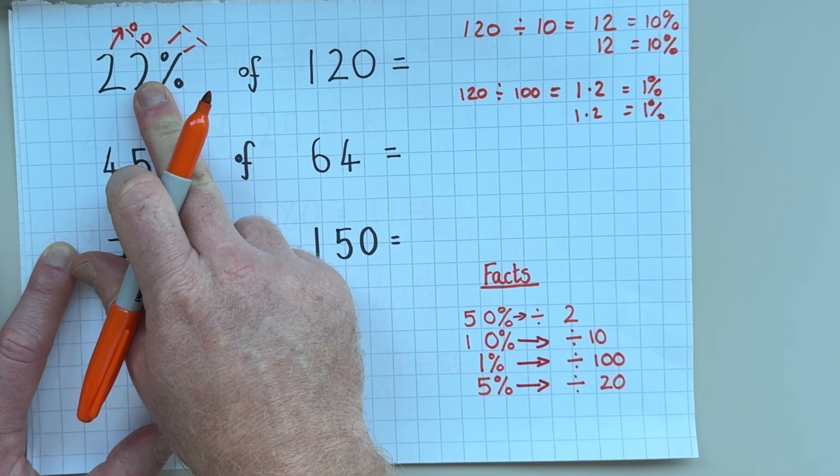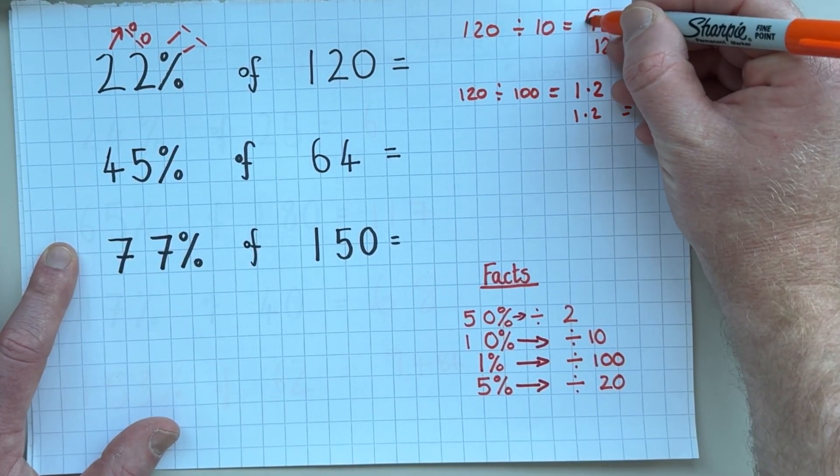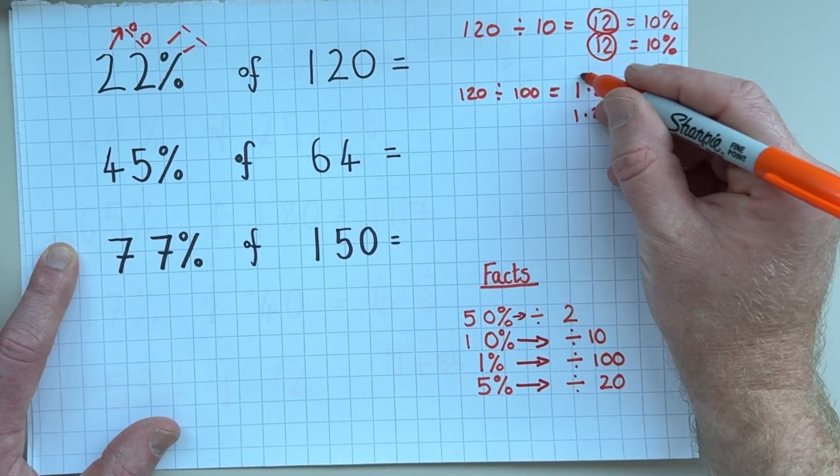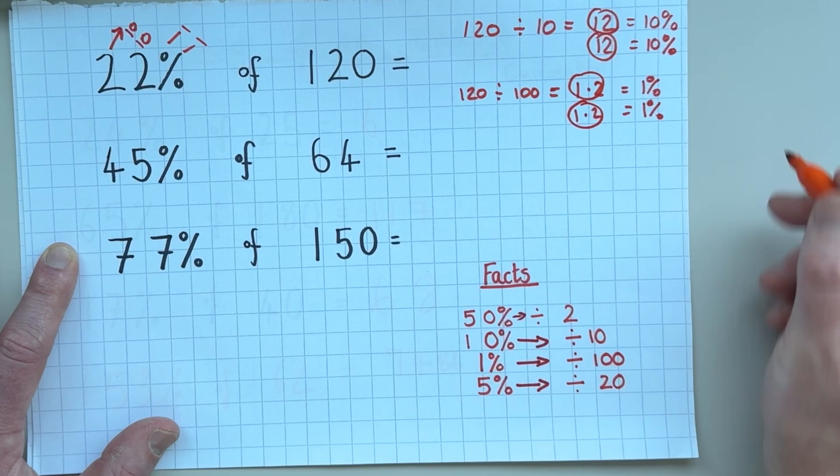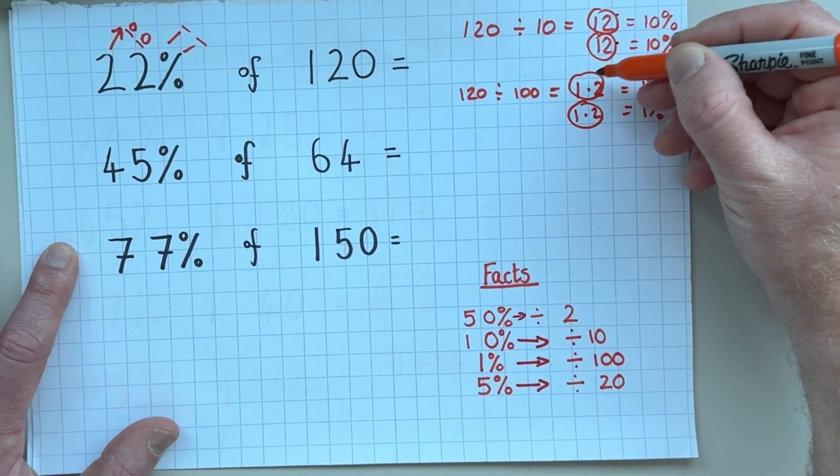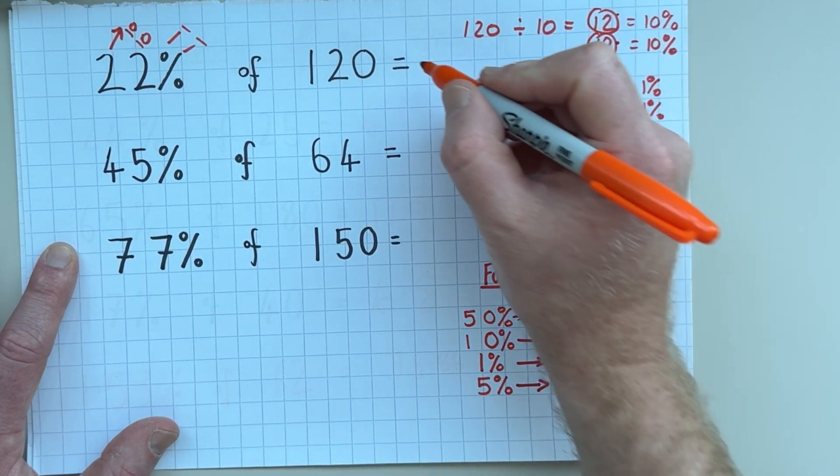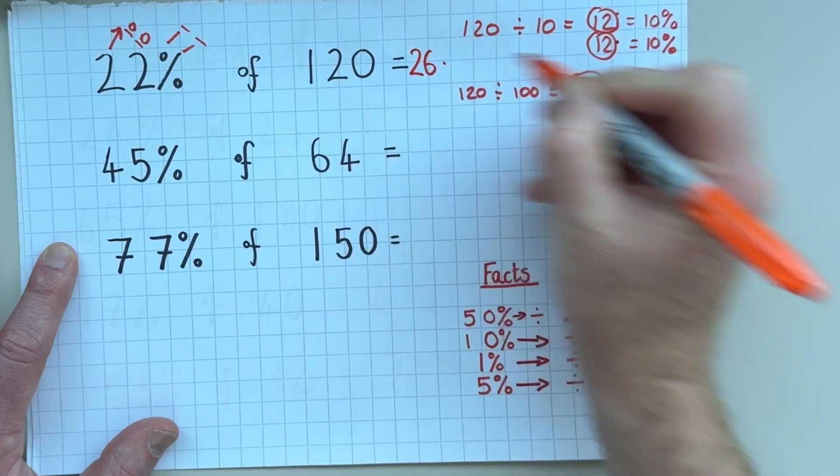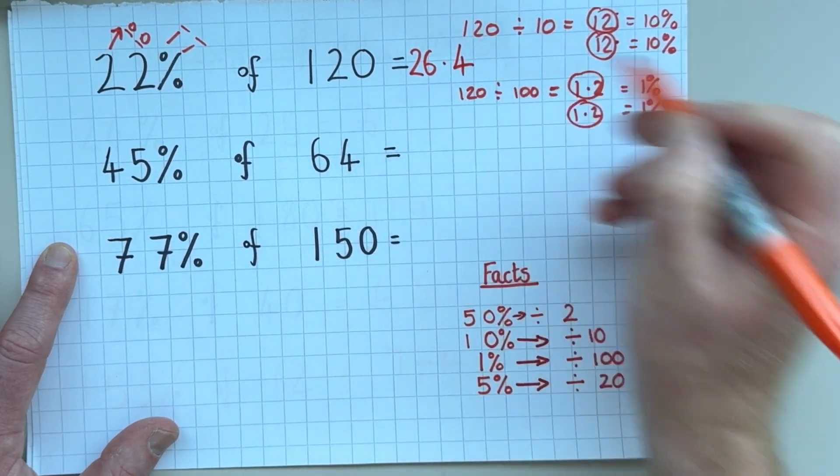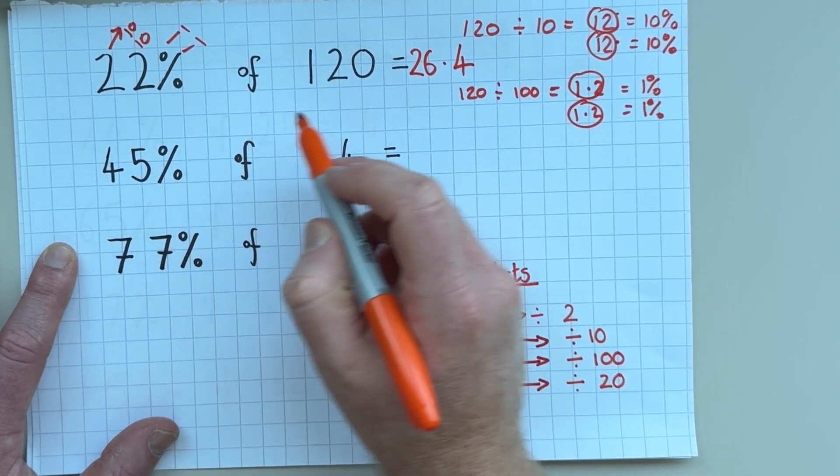And to work out what 22% is, all I need to do is add 12, 12, 1.2, 1.2 together. So that's 24, 25, 26.4. So that's 22% of 120.